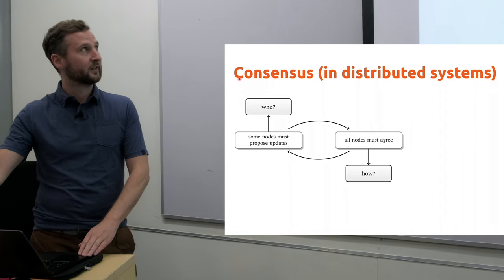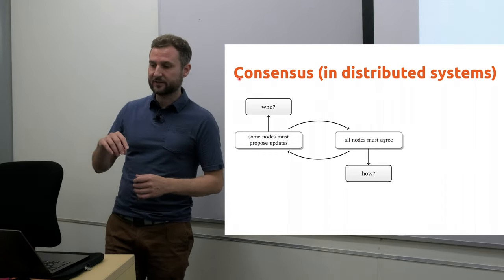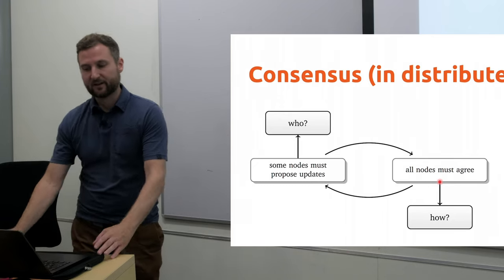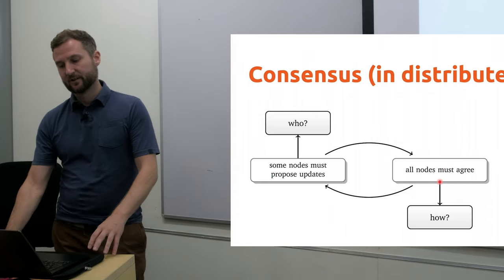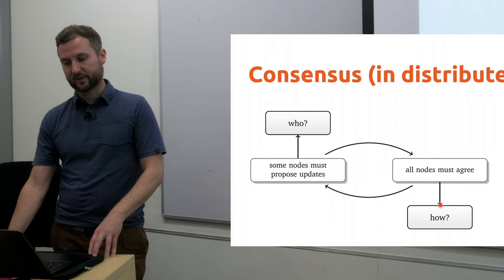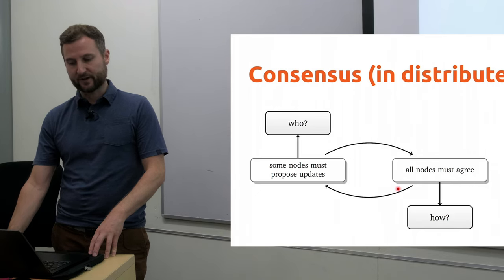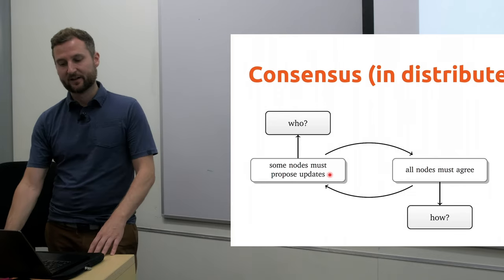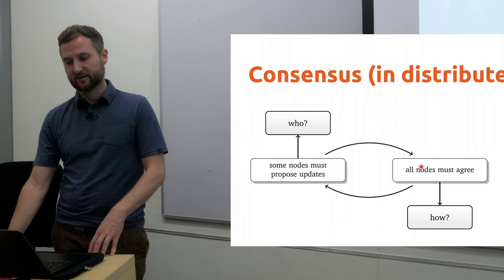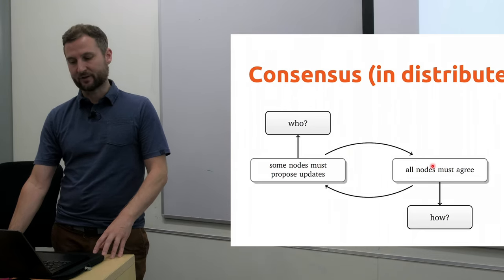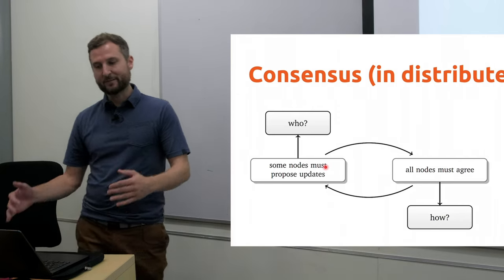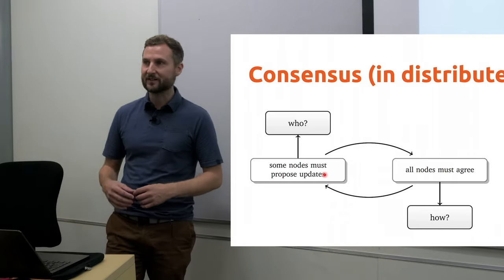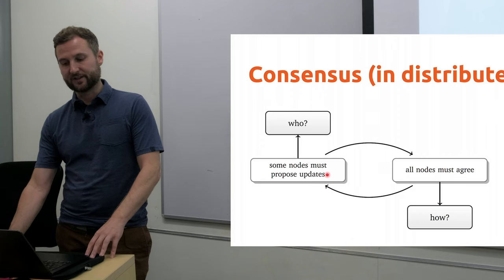So consensus, we can draw a flowchart here in distributed systems. All nodes must agree. When I receive a transaction, all the nodes have to agree I've got that transaction. Answering the question of how do we come to agreement is what comes up next. After the nodes come to agreement, some nodes must propose updates. That's the next transaction in the queue. We have to bring everyone back into agreement. It's this cyclical nature. The agreement in Bitcoin happens every 10 minutes. The agreement in other systems is going to be on the order of milliseconds.